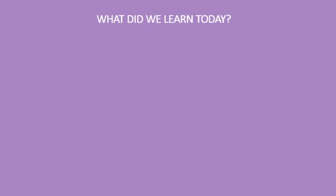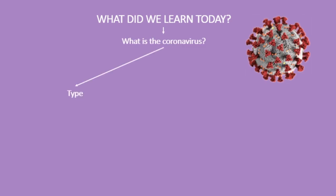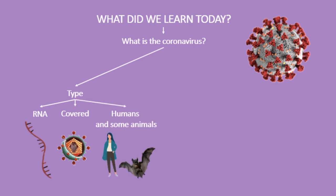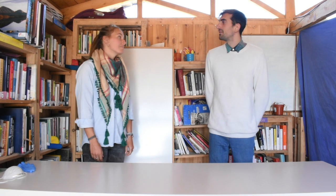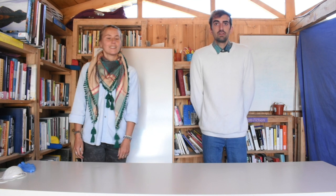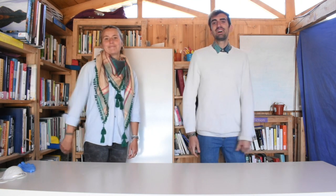What did we learn today? We learned about coronavirus. It is a virus with RNA that is covered with fats and that can infect humans and other animals. It can be transmitted through droplets and it can also survive in surfaces. And that was all for today. We hope you enjoyed. We hope you learned. And see you in the next class. Bye bye. Bye bye.